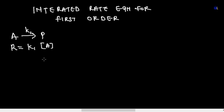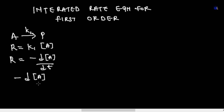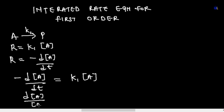We don't need to indicate the power of one — this expression is first order because the power of the concentration is one. The rate formula in relation to the change in concentration of the reactant is: -Δ[A]/Δt. We equate these two equations: -Δ[A]/Δt = k₁[A]. Rearranging to get similar variables on the same side gives us Δ[A]/[A] = -k₁ Δt.